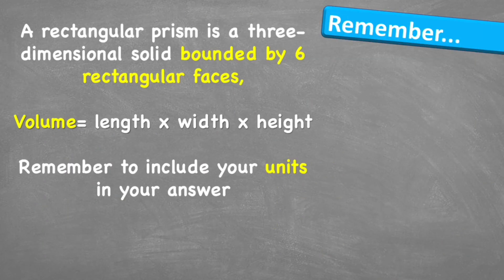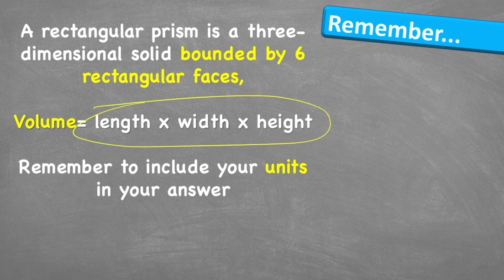Let's look at the things to remember. A rectangular prism is a three-dimensional solid bound by six rectangular faces. The formula for volume is length times width times height. And remember, this is commutative. Doesn't matter which way around we put it, we're going to still get the same answer. But remember to always include your units in your answer.